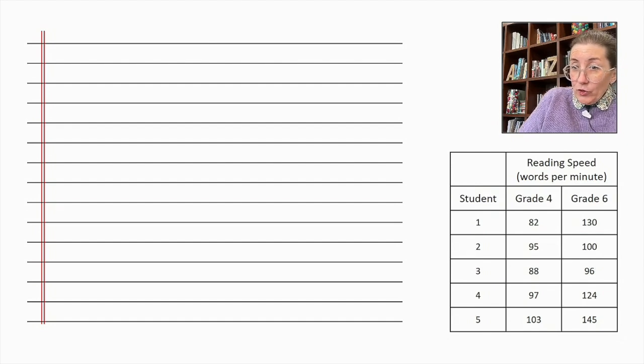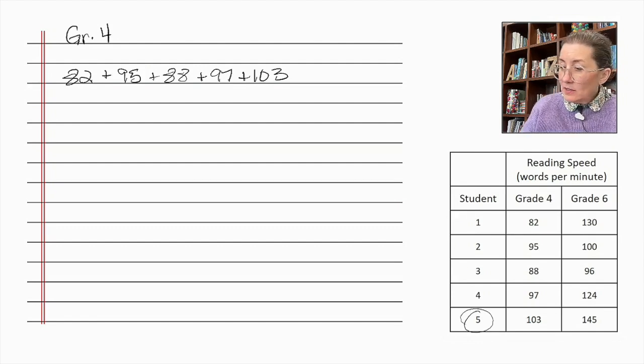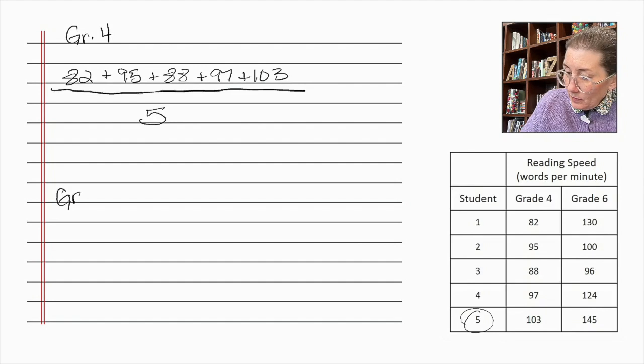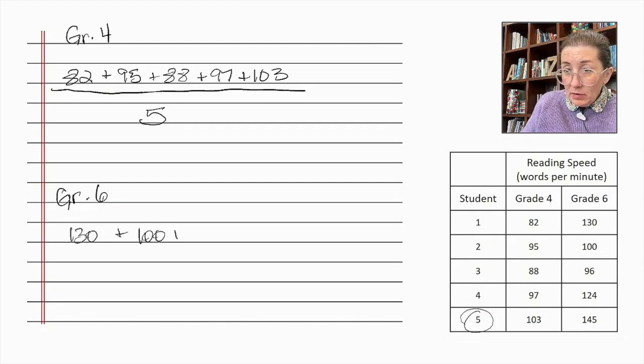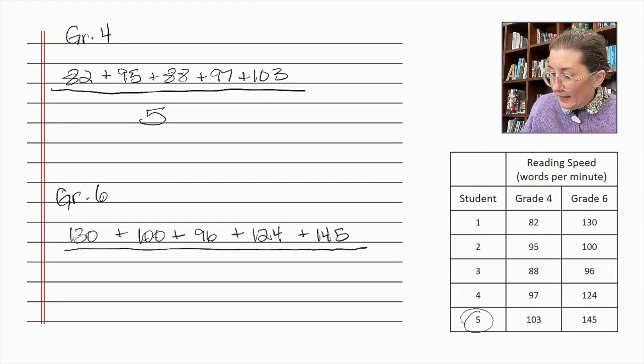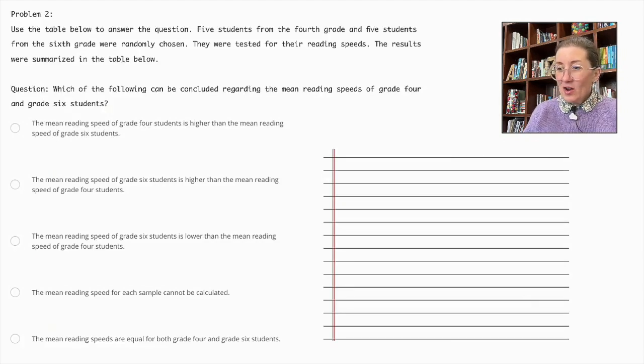We've got for the grade 4, 82 plus 95 plus 88 plus 97 plus 103. And we've got 5 in the data set, so it's going to be over 5. And for the grade 6 students, we will have 130 plus 100 plus 96 plus 124 plus 145 over 5 again. So, we can use our calculator now to find the solutions. Alright, now we've got the calculations.